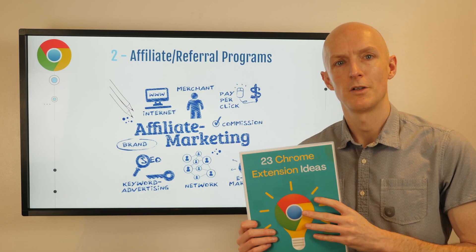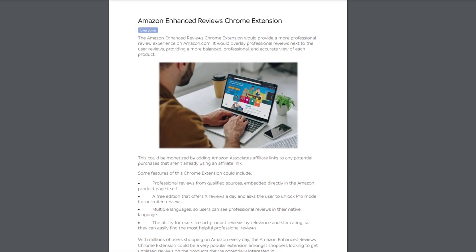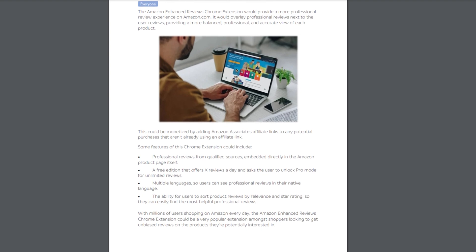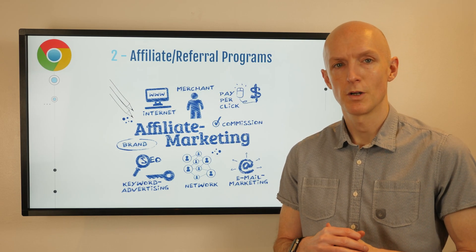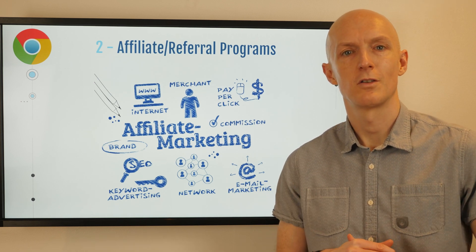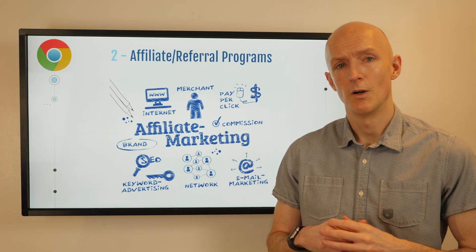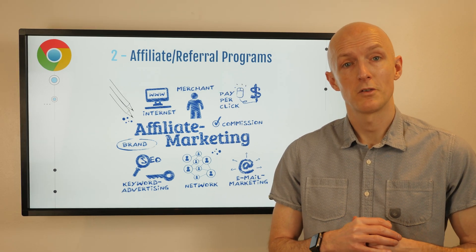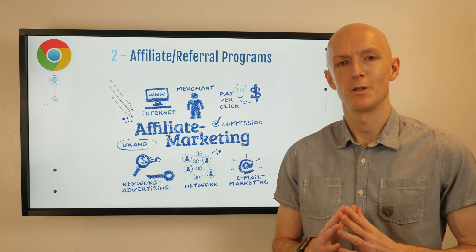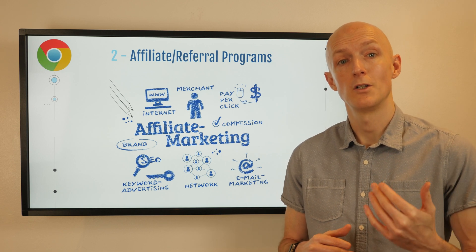Number one from that PDF is the Amazon Enhanced Reviews Chrome extension, which would overlay professional reviews next to user reviews providing a more balanced and accurate view of each product. This could be monetized by adding Amazon Associates affiliate links to any potential purchases that aren't already using an affiliate link. With millions of users shopping on Amazon every day, this could be a very popular extension for shoppers looking for unbiased product reviews.